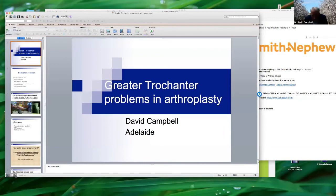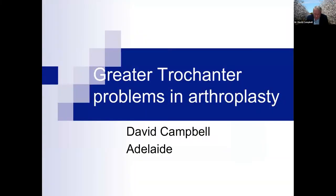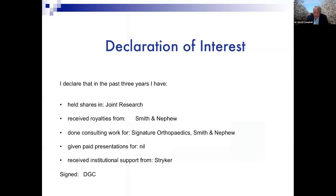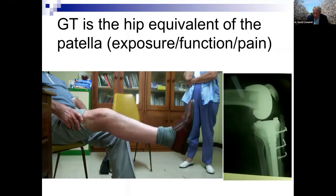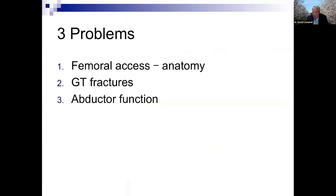Thank you everybody. I thank the organisers and sponsors for bringing me to this webinar. In Adelaide we don't see nearly the pathology this audience has, but I'll make do. I have no real interests to declare. My brief today is the great trochanter — in many ways the equivalent of the patella of the knee: a cause of exposure problems, functional issues, and residual pain. I'll discuss three problems: femoral access due to deformed femur anatomy, trochanteric fractures in various forms, and abductor function.